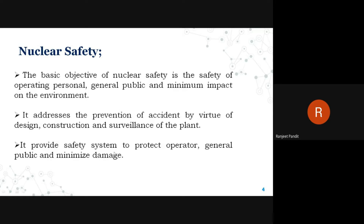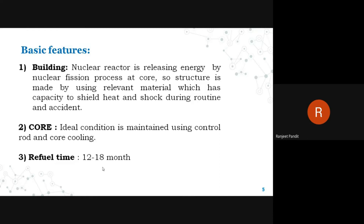The plant should provide safety systems to protect operators, the general public, and minimize damage. The first basic feature of a nuclear power plant is its building. Since the nuclear reactor releases energy at the core, the structure must have the capacity to shield heat as well as shock during both routine operation and accidents.